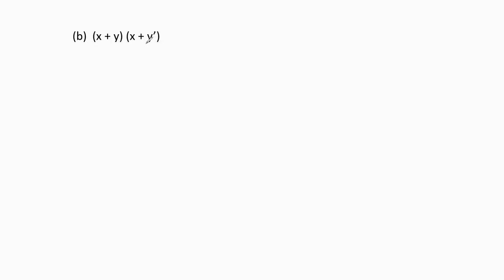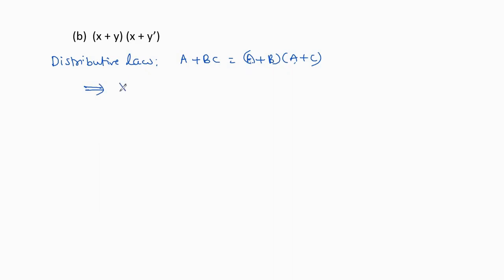The second Boolean expression can be simplified using the Boolean algebra distributive law: a + bc = (a + b)(a + c). Applying this law in reverse — (a + b)(a + c) = a + bc — we see that x is common in the two sum terms. This gives x + yy'. Since yy' = 0 by the complement law, we get x + 0 = x. The simplified expression has only 1 literal, versus 4 in the original.